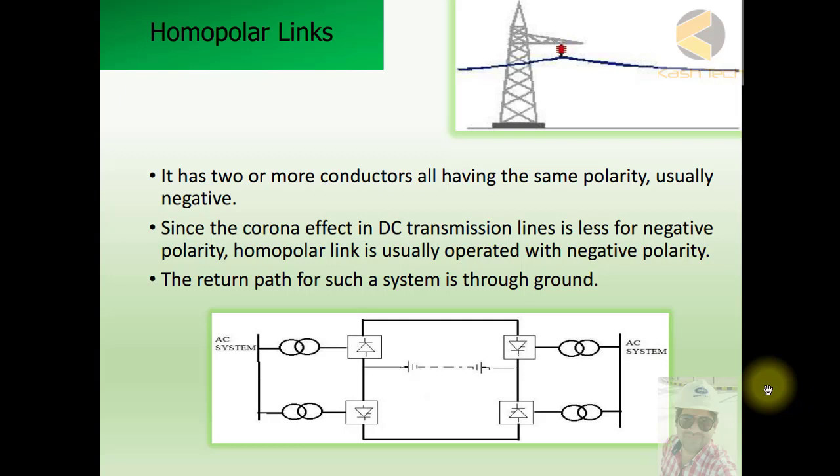Since the corona effect in DC transmission lines is less for negative polarity, homopolar link is usually operated with negative polarity. The return path for such a system is through ground.